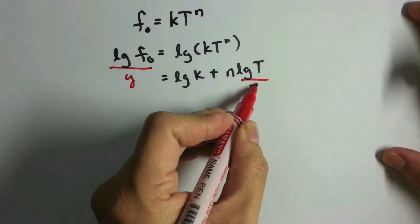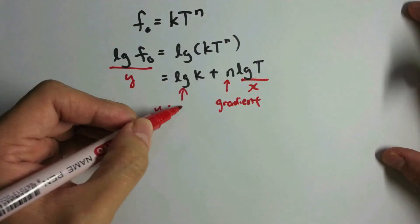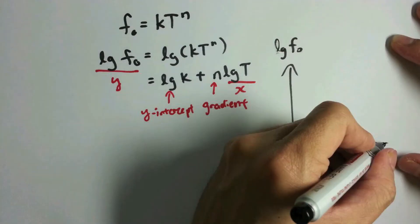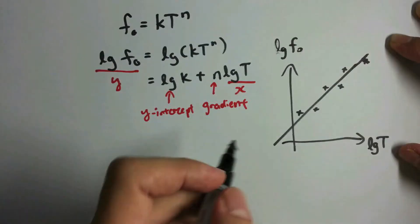Plotting a graph of log F0 versus log T, we can conclude that the assumption is correct if a linear relationship is observed. We can obtain the values of n and k from the gradient and the vertical intercept of the graph respectively.